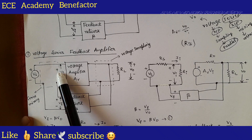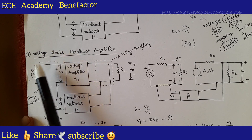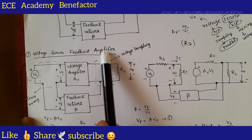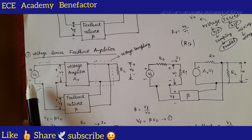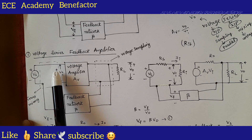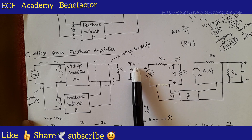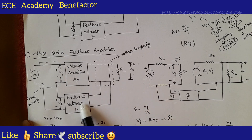For series mixing, the feedback is a voltage type. So we have connected a voltage source V s. This is the topology of the voltage series feedback amplifier. Source voltage V s, input voltage V i, load resistor across which is output voltage V naught, and here the output of the feedback network is V f — the feedback voltage, which is beta times V naught, a part of the output voltage.